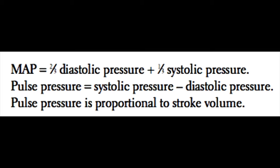The formula for pulse pressure, which you should also be aware of, is systolic pressure minus diastolic pressure. Pulse pressure is generally considered proportional to stroke volume — as stroke volume increases, so does the pulse pressure.